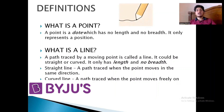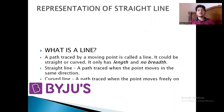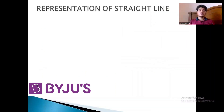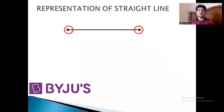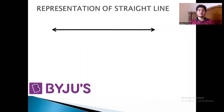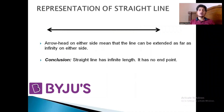Let us understand how we represent a straight line on paper. A straight line has two arrows on either side, which represent that this line has no finite length — it can be extended up to infinity on both sides. So we can conclude that a straight line has infinite length and it has no end points.